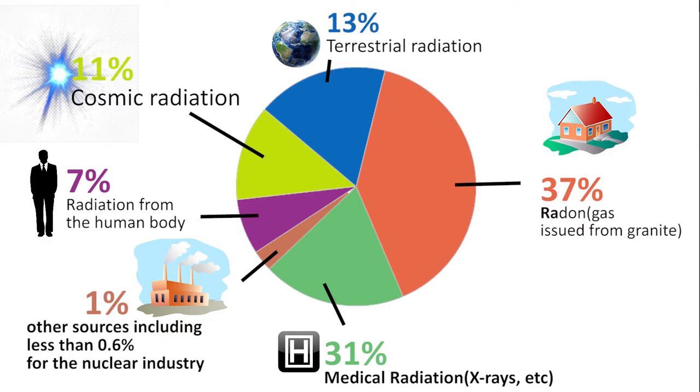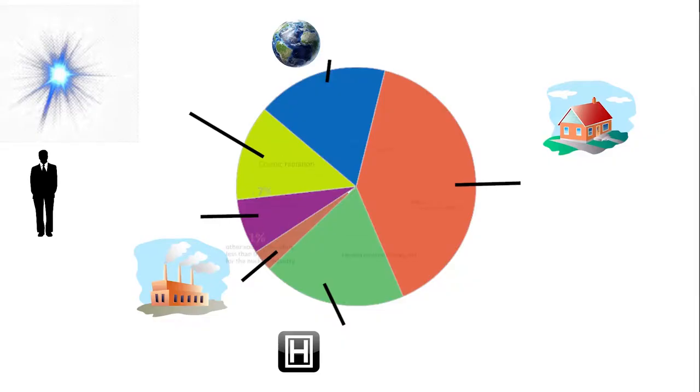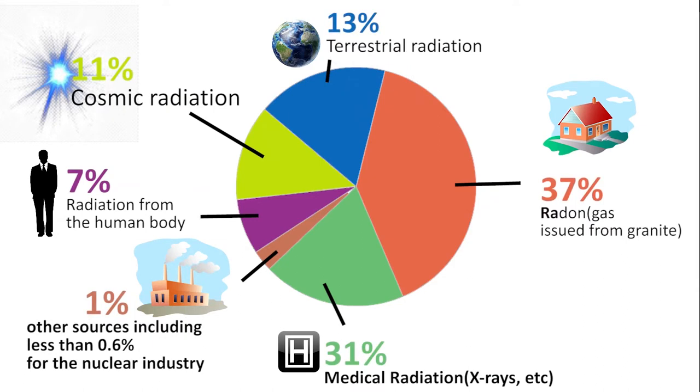The human body itself also emits radiation, contributing 7% of the total. The radioactive element present in the human body is K-40, which is potassium — our bodies contain potassium and it is radioactive. 1% is contributed by nuclear industries developing nuclear weapons and atomic bombs. The last part, 31%, is used in medical setups — hospitals use 31% of the total amount of radiation.